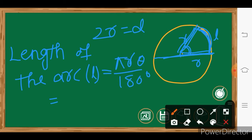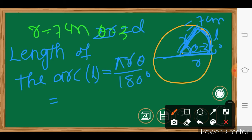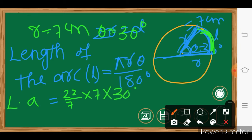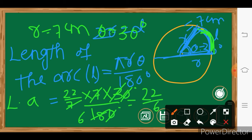If θ equals 30 degrees, then what is the arc length? Arc length L equals π × r × θ / 180°. With π = 22/7 and r = 7, substituting: 22/7 × 7 × 30/180. The 7s cancel and 30/180 simplifies, giving 22/6 centimeters as the arc length.